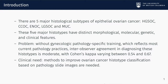Currently, these histotypes are determined by a pathologist's microscopic examination of tumor slide images. This process has been hampered by poor inter-observer agreement, with Cohen's kappa varying between 0.54 and 0.67. Therefore, fast and automatic computer-aided methods to improve ovarian cancer histotype classification based on pathology slide images are needed.